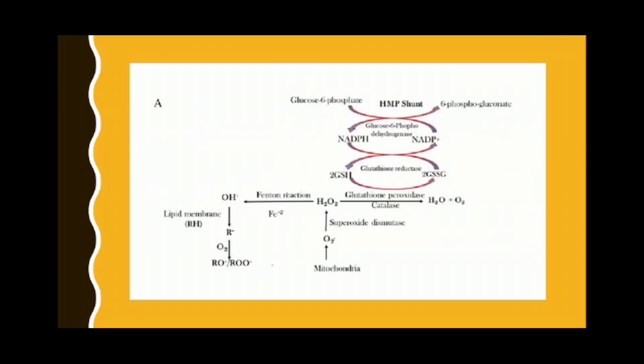Now we will discuss the basic mechanism of glutathione. When there is a high concentration of peroxides — hydrogen peroxide or lipid peroxide generated in the matrix — they oxidize biomolecules like proteins, lipids, and DNA via the Fenton reaction. Hydrogen peroxide is converted to water by catalase and glutathione peroxidase. The reduced form of glutathione (GSH) is converted to the oxidized form (GSSG) during this process. GSSG is further converted back to GSH by the enzyme glutathione reductase in the presence of NADPH.